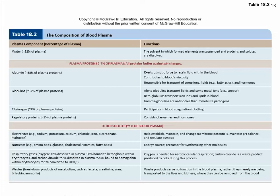Approximately 58 percent of plasma proteins is albumin. Albumin's job is to exert osmotic forces — it retains fluid within the blood. It draws fluid from the interstitial fluid, which is loaded with waste products, and brings it back to the blood to be distributed to the lungs and kidneys. It also contributes to blood viscosity, and attached to albumin are some lipids, fatty acids, and hormones, so it plays a slight role in transport. But its main function is osmotic force.